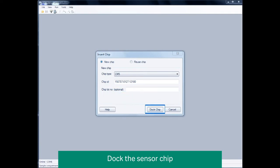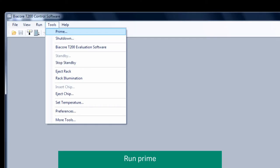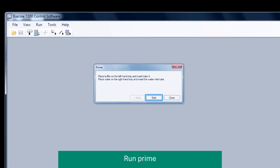A standby flow of running buffer is started automatically when the chip has been docked. Next, choose Tools Prime to ensure that all parts of the liquid handling system are flushed with fresh running buffer. Follow the instructions in the dialog boxes to start the procedure.